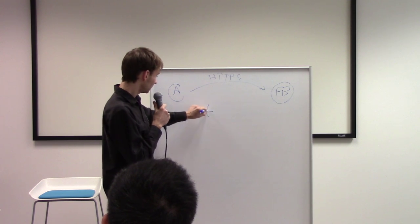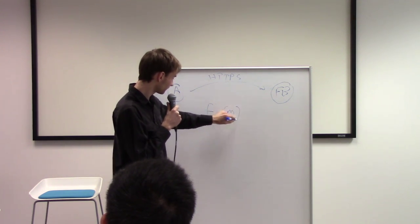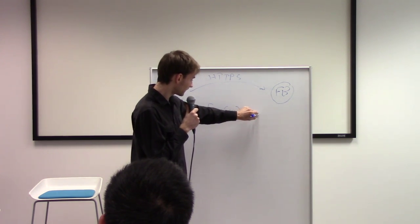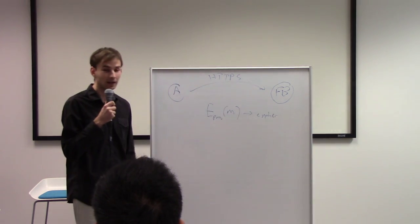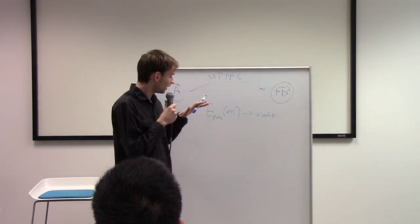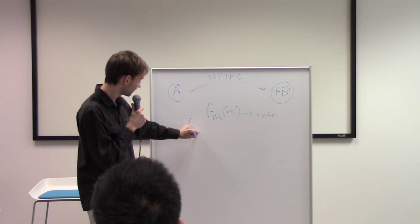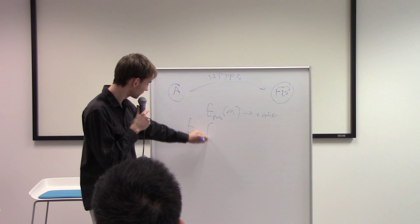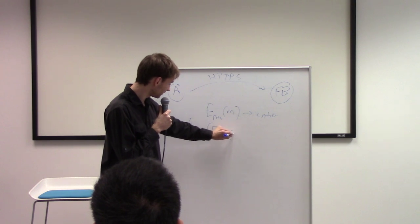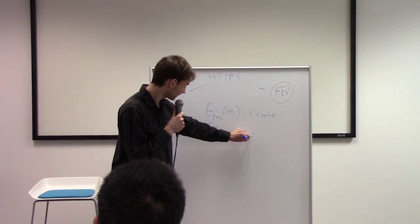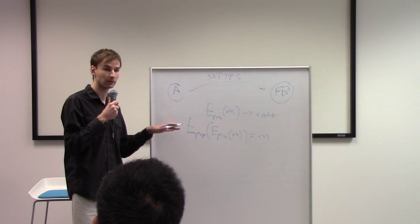The nice property of public-private key pairs, this is how asymmetric encryption works, is the following. If you encrypt with a private key pair some message, you're going to get ciphertext. If you encrypt with a public key and you pass to that the encrypted message, you will get back the message. This is the basic idea of asymmetric encryption.